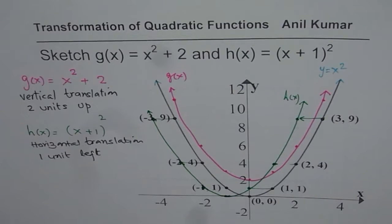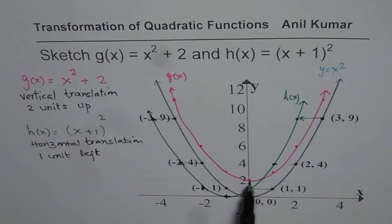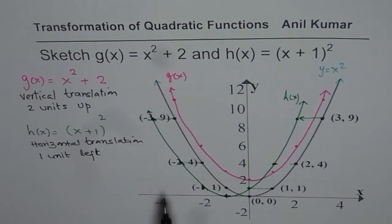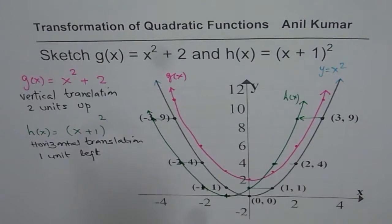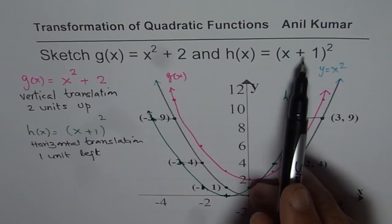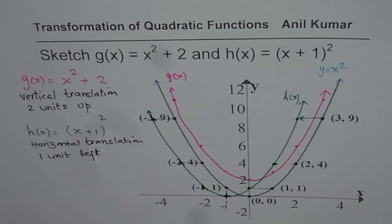You can pause the video and write down the changes you observe in these two graphs. In the first graph, with vertical translation, the x-coordinate of the vertex remains the same, but the y-coordinate changes from 0 to 2 — the vertex moves from (0, 0) to (0, 2). In the second case, with horizontal translation, the x-value changes while y remains the same — the vertex moves to (−1, 0), and the axis of symmetry becomes x = −1.